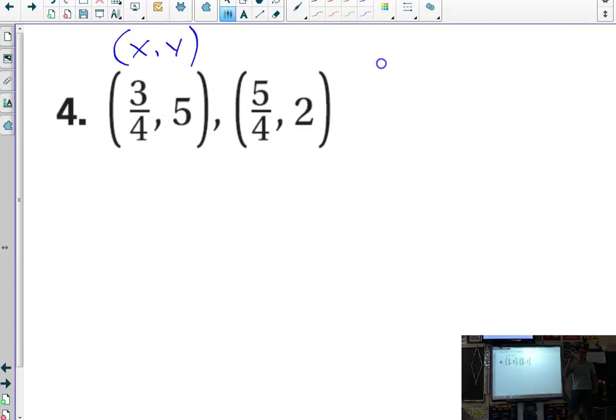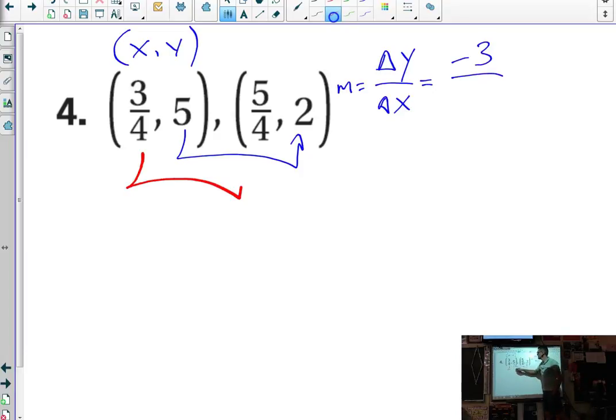A couple of you are looking at them backwards. So when I look at delta y over delta x to try to find our slope, which by the way we often call m, my change in y from 5 to 2 was actually down by 3. My change in x was actually up, but by 2 fourths. Well, that's really a half.